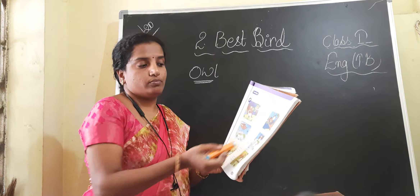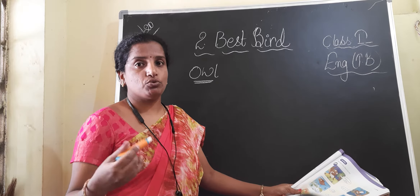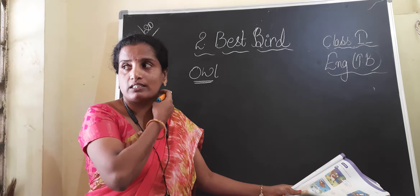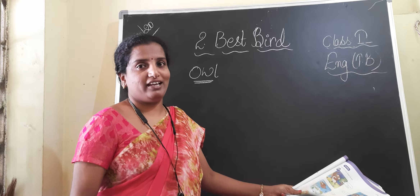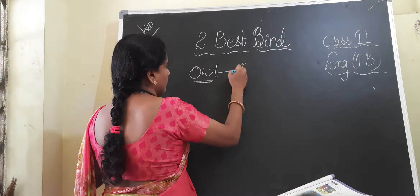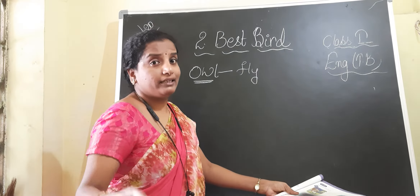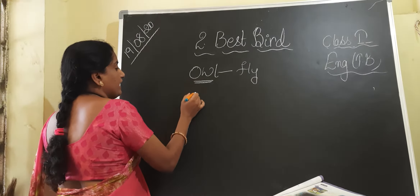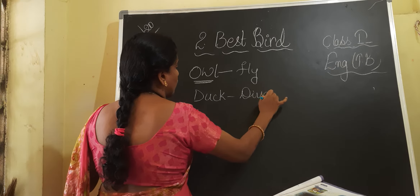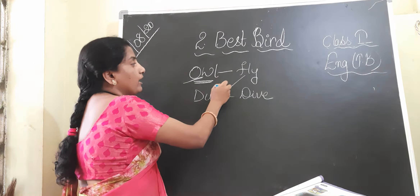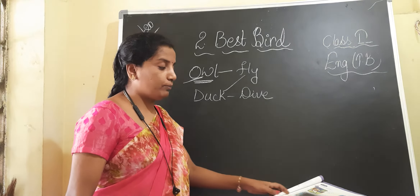The owl is saying, 'I am the best bird. Look at me.' He tells us that he is the best bird and looks very beautiful. The owl can fly. But then the duck explains himself — the duck says, 'I can dive,' meaning he can swim in water. But the owl can't swim in water, just as the duck can't fly in the sky. In their own positions, they both are very nice.